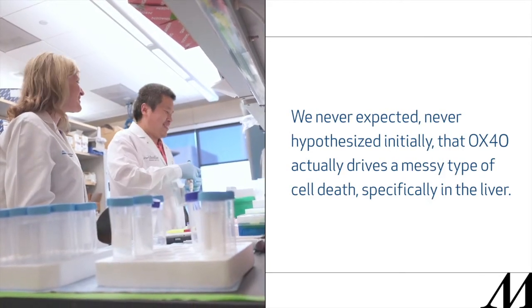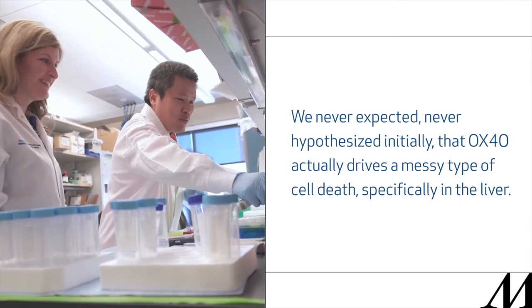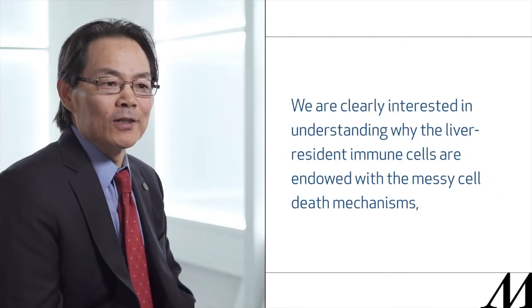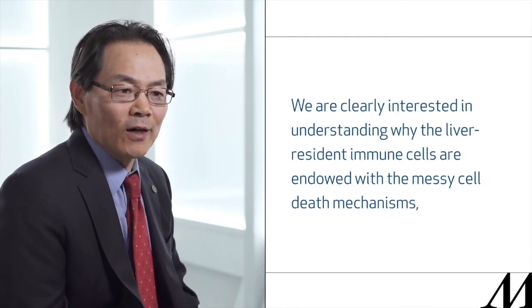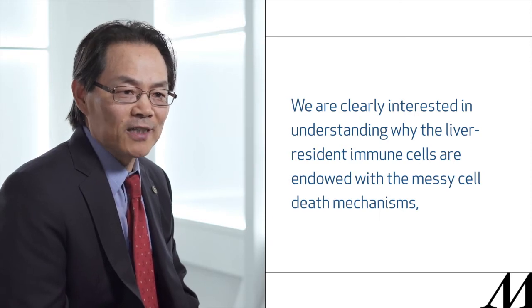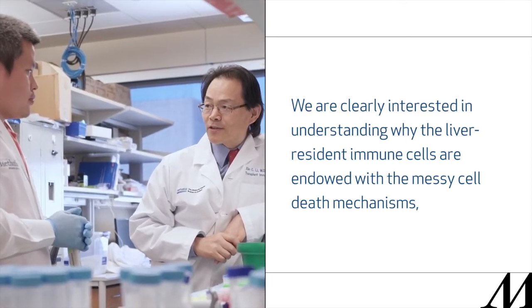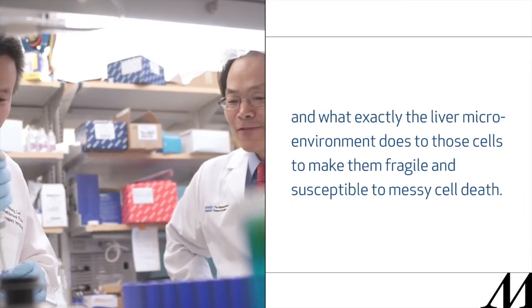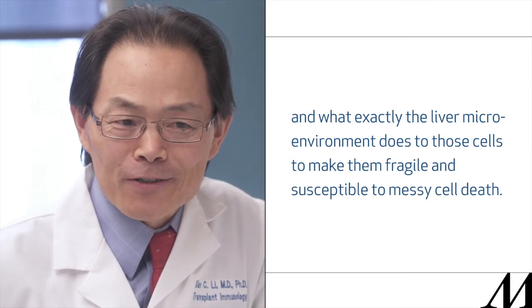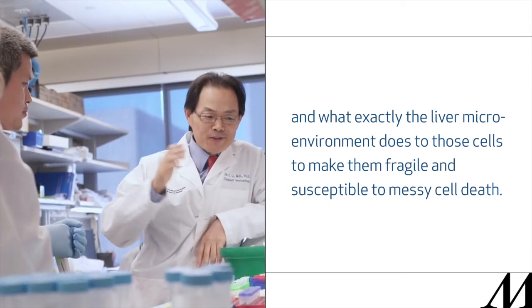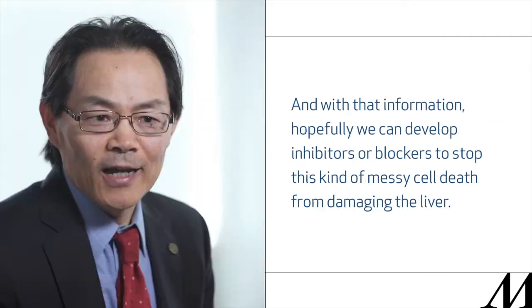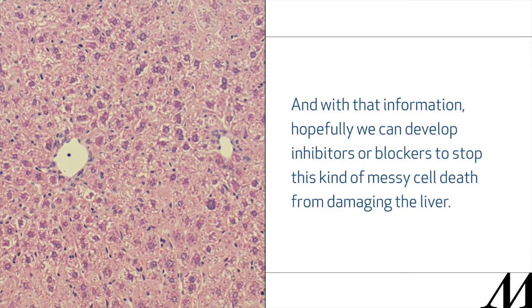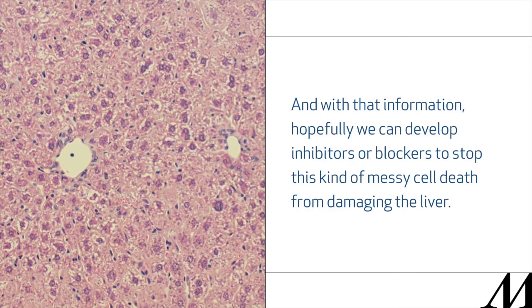We never expected this — it was never an initial hypothesis — that OX40 actually drives a messy type of cell death specifically in the liver. We are clearly interested in understanding why liver resident immune cells are endowed with these messy cell death mechanisms, and what exactly the liver microenvironment does to make them fragile and susceptible. With that information, hopefully we can develop inhibitors or blockers to stop this messy cell death from damaging the liver.